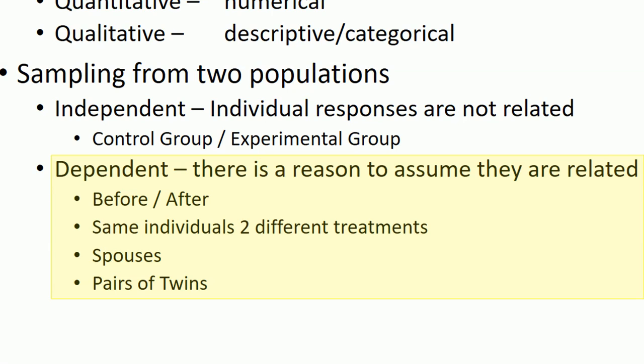Another example of dependent groups would be if you're doing a survey and you're asking a husband and wife or spouses some question like how happy are you in your relationship, or how much do you like the summertime or whatever question it is.